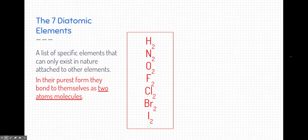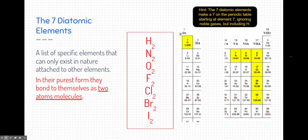The last thing I want to talk to you about is the seven diatomic elements. These elements are really important and they're a list of specific elements that can only exist in nature attached to other elements. In their purest form, they bonded themselves to form two atom molecules. So this is a list on your periodic table that you just need to memorize. You just need to know what these elements are. To help you with that, there's this list on the periodic table. If you use the periodic table and follow along, that the seven diatomic elements make a seven on the periodic table starting at element seven and also including hydrogen but ignoring the noble gases. That's a good way to remember these elements.